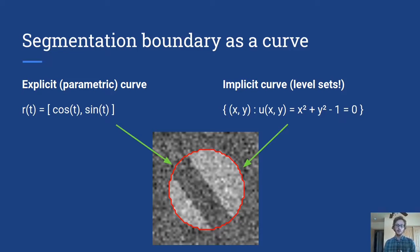On the other hand, we can represent a curve implicitly. So we have this function u of x,y that's equal to x squared plus y squared minus one. And if we look at all the places where that's equal to zero, all the x,y that's zero, that also represents the same curve. So we would call that the zero level set of that function u.